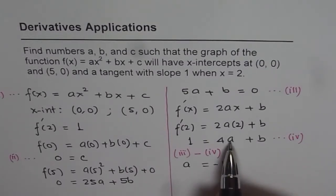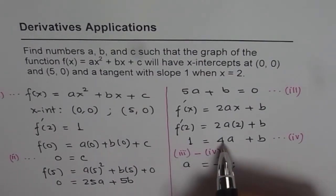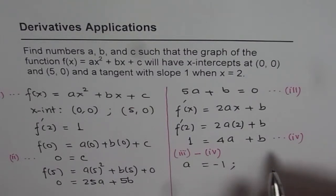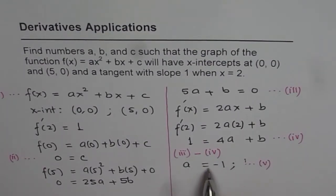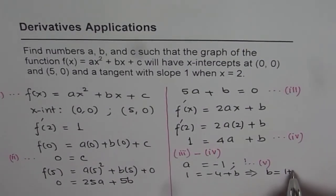So a is -1 for us. And if I substitute a as -1, I can find the value of b from any of these equations. So let me use equation 4 to find value of b. So if a is -1, we will write a as -1 here, so we get 1 = -4 + b, and that gives us value of b equals 1 + 4, which is 5.